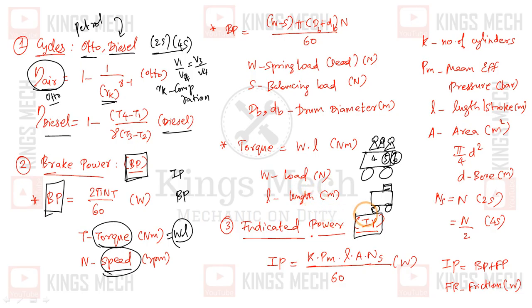Indicator power is the power from the engine itself without external loads. The formula is KP LAN by 60. K is the number of cylinders - 1 cylinder, 2 cylinder, 3 cylinder engine. P is the mean effective pressure, MEP.